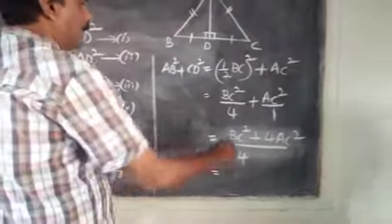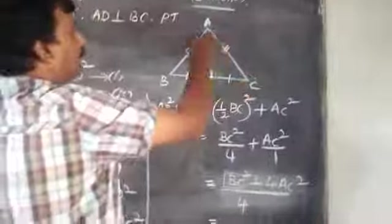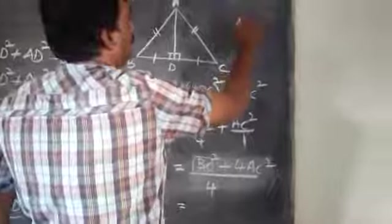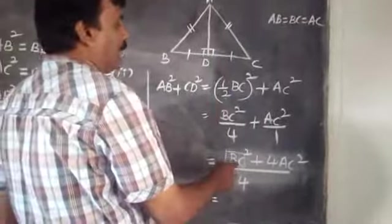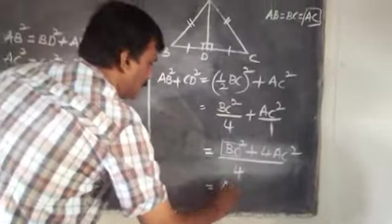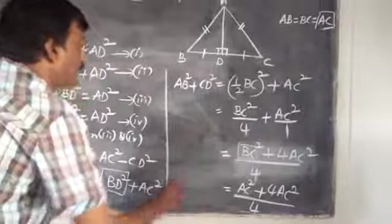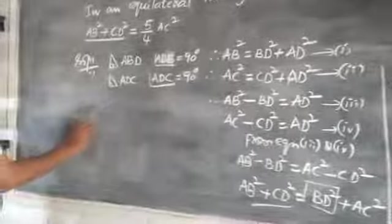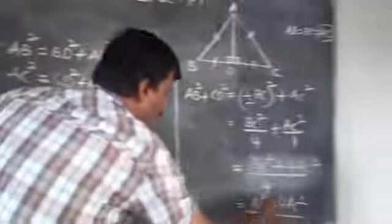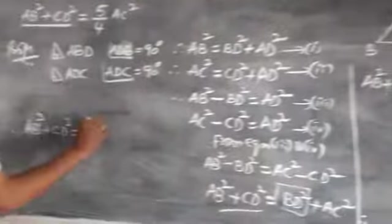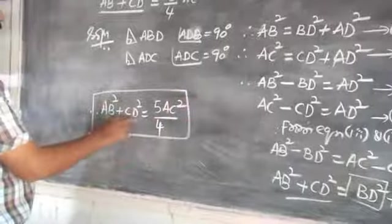So AB square plus CD square equals BC square over 4 plus AC square. Since BC is equal to AC in an equilateral triangle, substituting gives AC square plus 4 AC square all divided by 4, which equals 5 AC square divided by 4. Therefore AB square plus CD square is equal to 5 by 4 AC square.